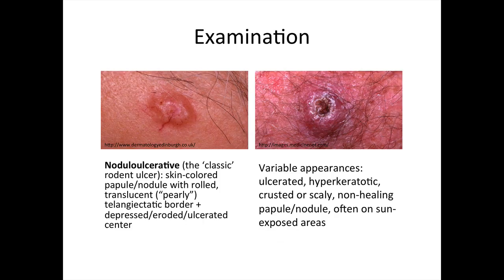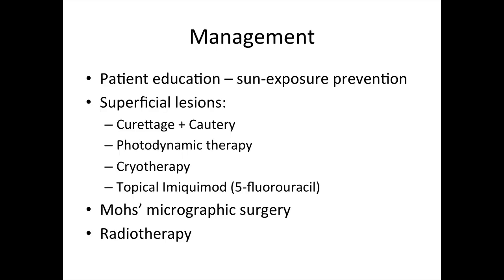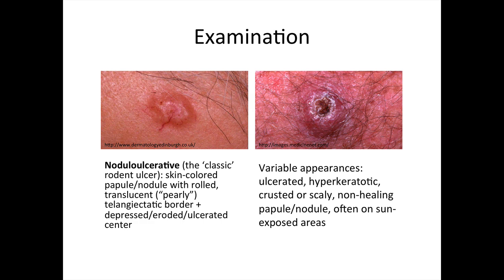The two pictures here show what the lesions would classically appear. BCCs are generally skin-colored lesions with a rolled, pearly border, sometimes with telangiectasia — the presence of visibly small dilated vessels. The ulcerated center is common, but not specific to nodulo-ulcerative BCCs, especially in the early stages of lesion growth. SCCs are variable in their appearance, but are usually centrally ulcerated, with areas of hyperkeratosis, scaling, or crusting. These lesions may appear non-healing, and are often on sun-exposed areas.